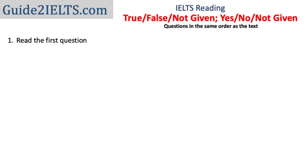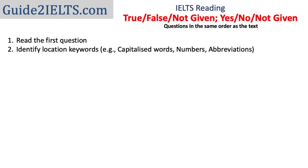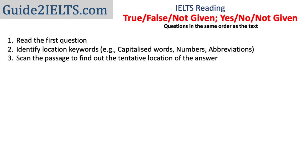So how do you solve these questions? First, read one question. Identify the location keywords. Figuring out the tentative location of the answer in the passage is very important for all question types which have answers in order. Sometimes it helps to start with the second or third question first if you feel their answers would be easier to locate. Once you've identified some location keywords, scan the passage — scanning means reading quickly while looking for specific information. Once you have a tentative location, go back to the question and reread it, understanding it thoroughly.